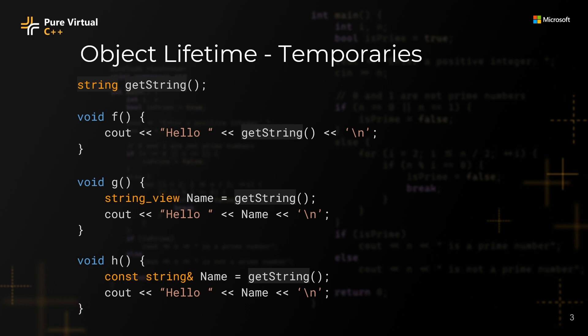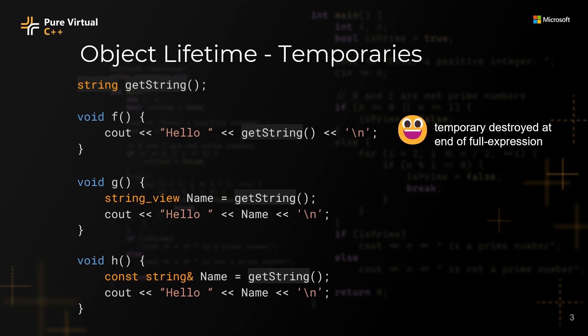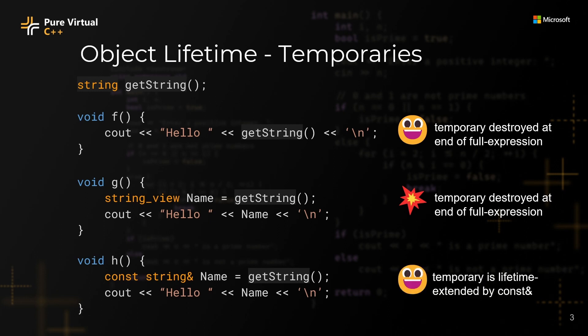Here, in the first example, getString will return a temporary object, and that temporary object will be destroyed at the end of the full expression. There is no dangling in this example. In the second example, getString returns a temporary object. StringView will refer to this temporary object, but this temporary object will be destroyed by the time we want to print it. And in the last example, the temporary object returned by getString will be lifetime extended by the reference, so it will not be destroyed by the time we print it, so this code snippet is safe.